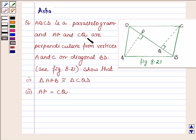and AP and CQ are perpendiculars from vertices A and C on diagonal BD. Show that triangle APB is congruent to triangle CQD and AP is equal to CQ.